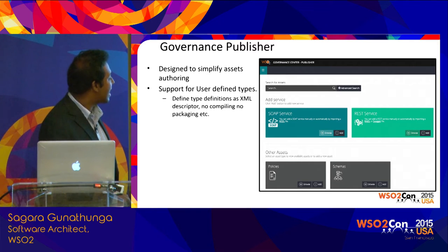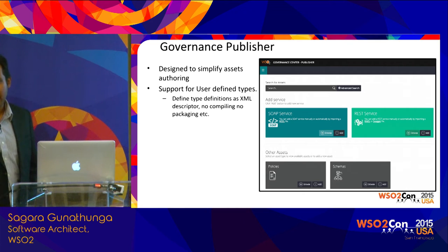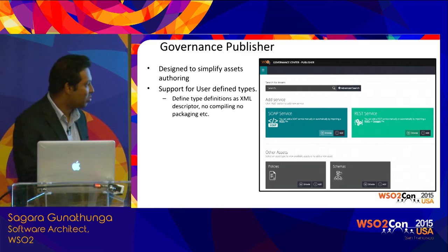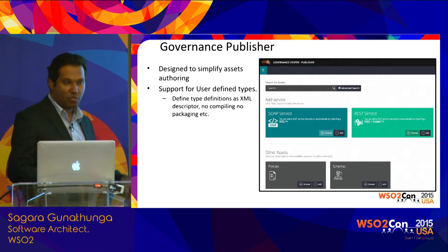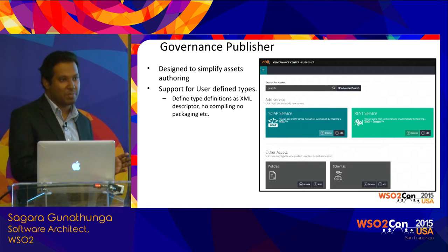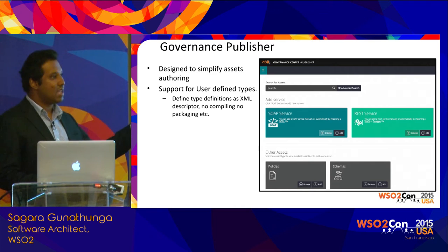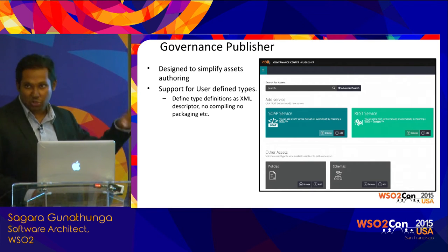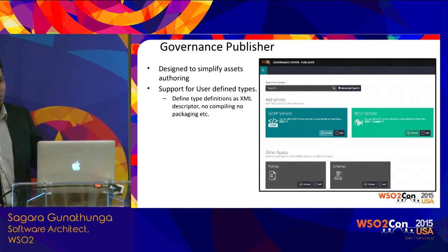If you add any RXT — that is, your own asset type for the governance registry — it appears in the Publisher as well. For example, here you see policies and schemas. For your digital asset type, you can write a type definition as a pure XML file, with no Java required. The administrator adds that new type through the admin console as a separate administrative task, and then it will appear in the Publisher.